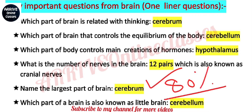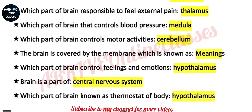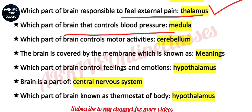Next question: which part of brain is known as little brain? The answer is cerebellum. Next question: which part of brain is responsible to feel external pain? The answer is thalamus, which is a part of forebrain. Which part of brain controls blood pressure? Medulla oblongata, which is the last part of the brain.